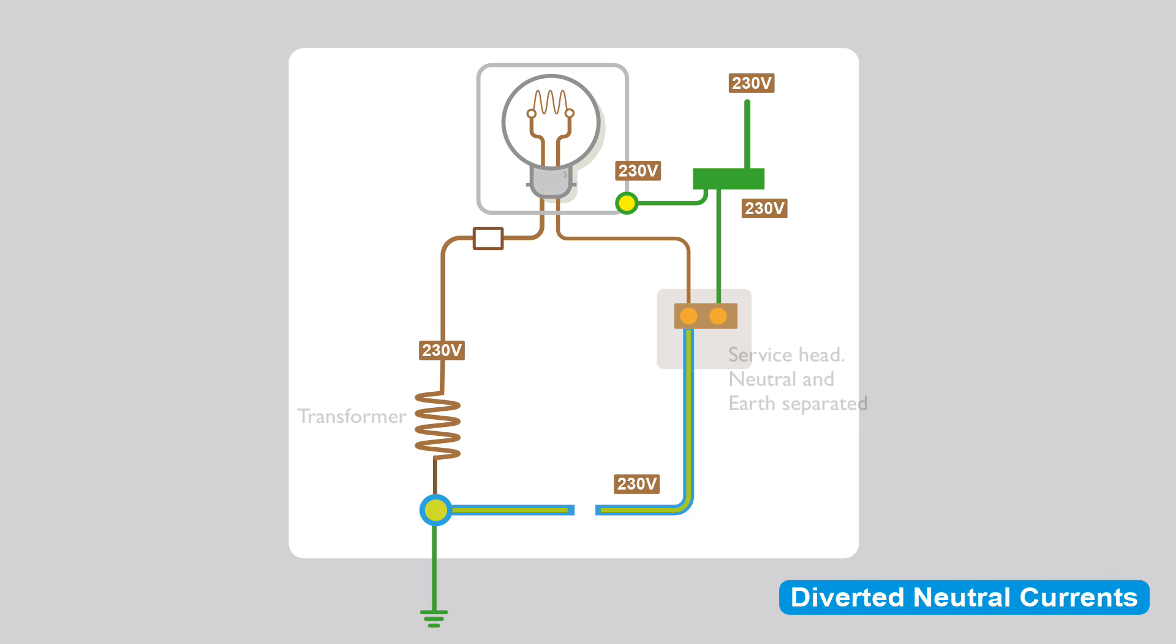So back to our simple circuit. This time we've added the service head where the neutral and earth are separated, and we've added the MET with its connection to the light fitting and various circuits from that. We've got a broken PEN conductor, so we'll follow the flow of power. Power will come into the installation because of the service cutout and any fusing, any protective devices. It'll go through the load. In what used to be the neutral return path, it'll still go down there, but we can't get back to the transformer this way. So it's going to try and find another direction to go.